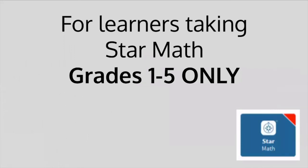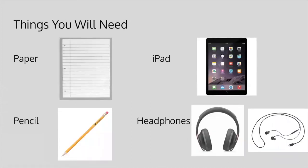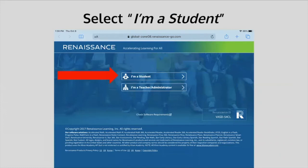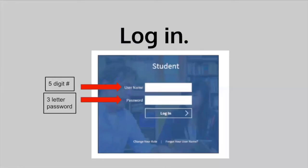In this section, we are going to cover information for learners taking STAR Math. This is for grades one through five only. Rewind this video to find more information on STAR Reading or STAR Early Literacy. You will need your iPad, headphones, as well as paper and pencil for this test — paper and pencil will be helpful for solving math problems. If you do not hear the test, make sure the volume is turned up and that your headphones are plugged in and working. Find this app on your iPad — it's white and looks like a star. When you open the app, select 'I'm a student.' Students will log in using their five-number username and three-letter password. If you can't remember your username or password, please contact your teacher.